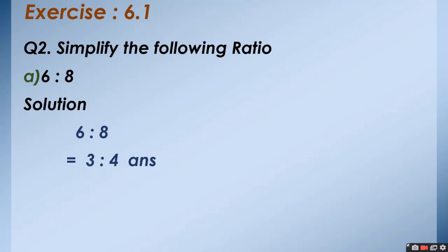And in the last, 6 ratio 8 will be 3 ratio 4 after reducing into the lowest term. And they have cancelled out by 2. 2 3's are 6, 2 4's are 8.